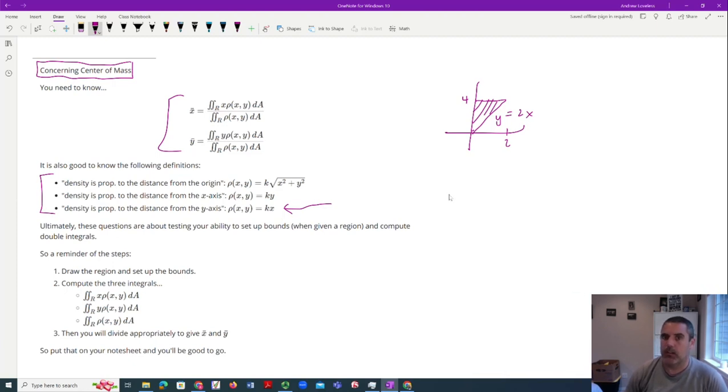Meaning if you want to compute x̄, you're going to do the double integral over this region of x times whatever the density is, which I said was just this. The problem would tell you the density, or it would say one of these phrases, divided by the bottom, which actually is the total mass.